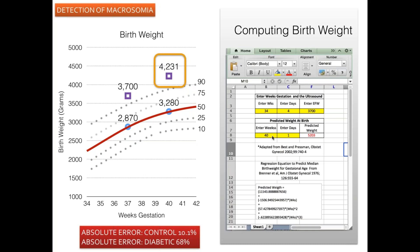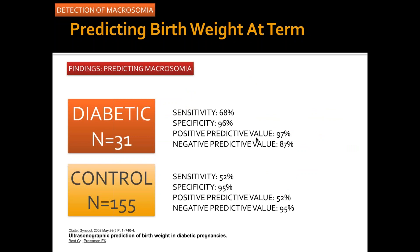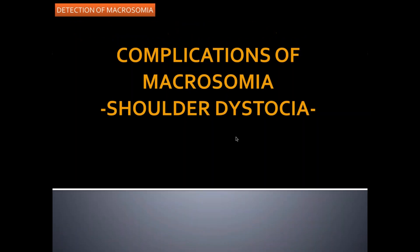We created an Excel spreadsheet calculator that performs this nicely. In the diabetic population, the sensitivity for predicting macrosomia using this approach was 68%, specificity 96%, positive predictive value 97%, and negative predictive value 87%. This is a concept worth considering when scanning fetuses from 36 to 38 weeks. Measure the weight, compute the ratio using either Hadlock or limb volume, and contact me if you'd like the calculator.